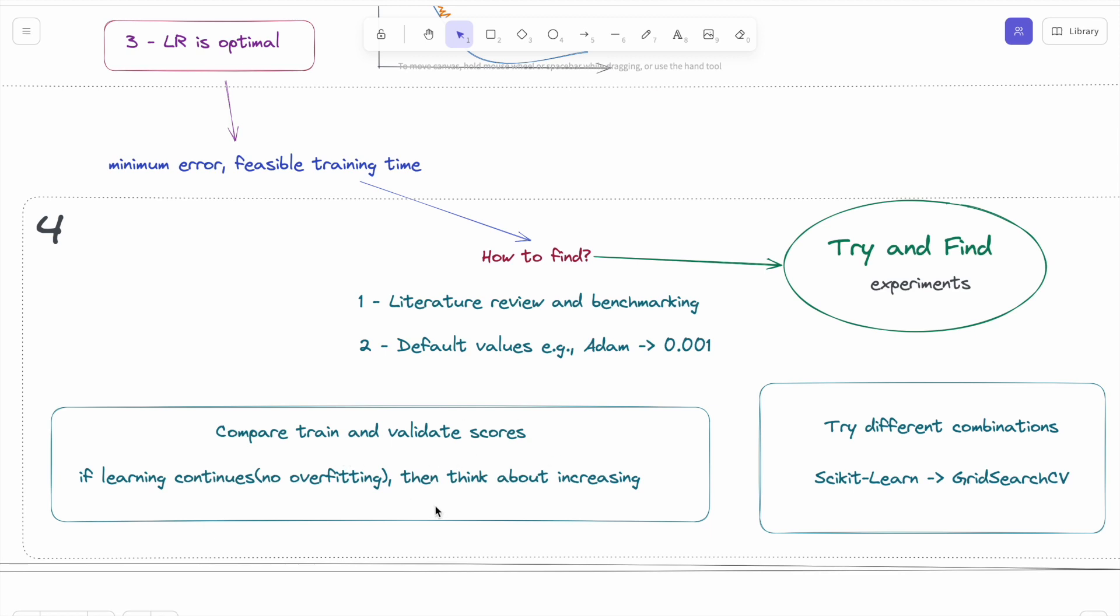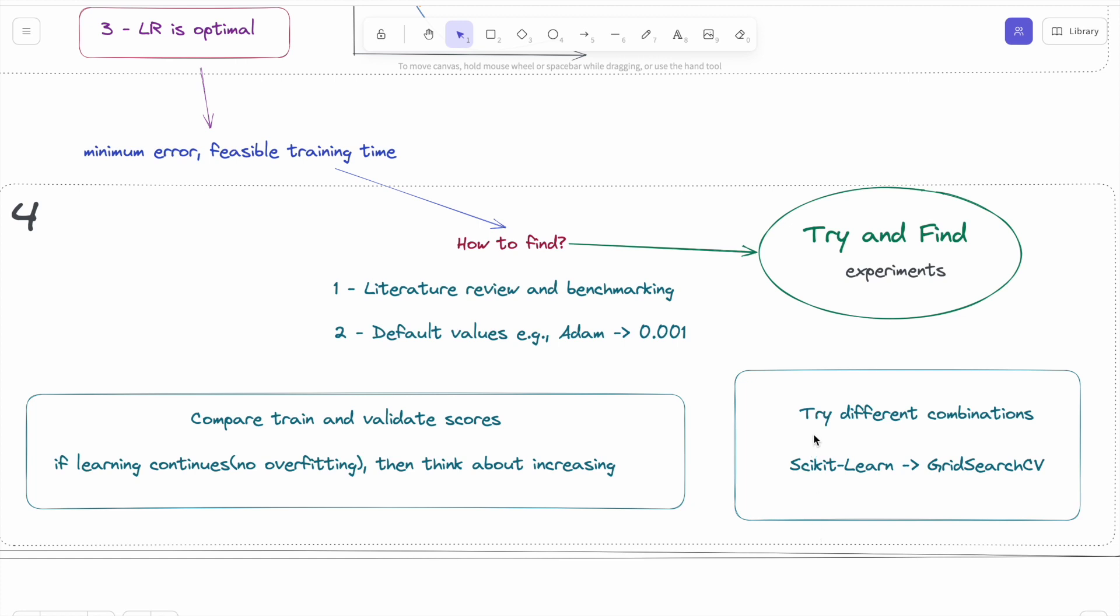The first thing you can do is compare the training and validation scores in that experimental part. If the learning continues inversely with no overfitting, then you can think about increasing the learning rate because that means there is a way to go, and maybe your step sizes are too small to reach them.